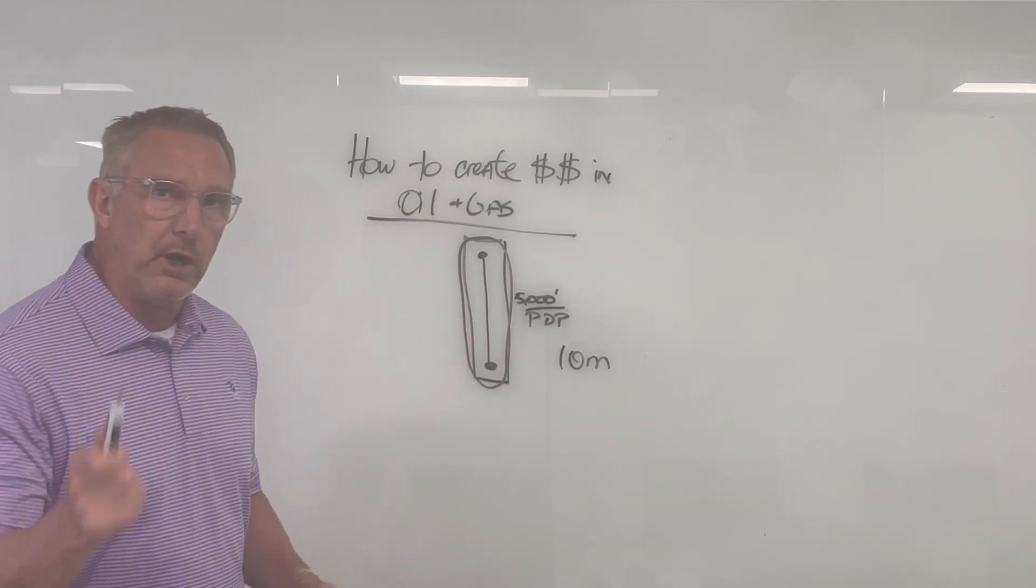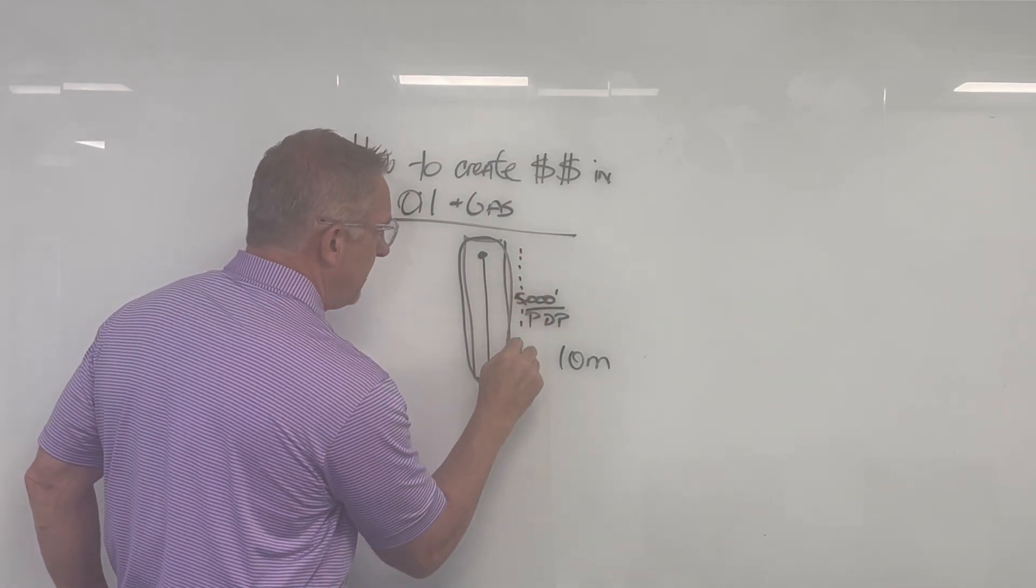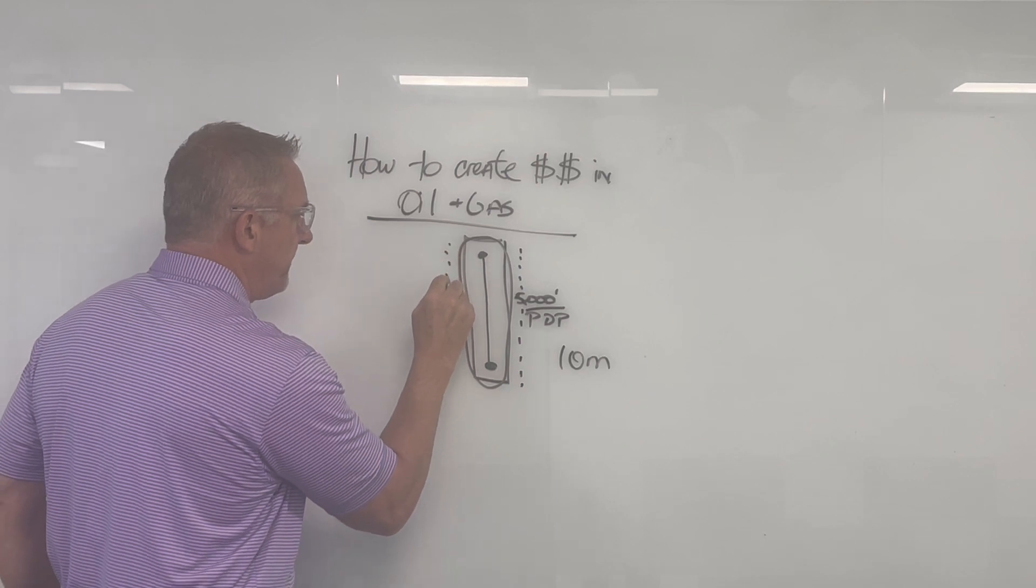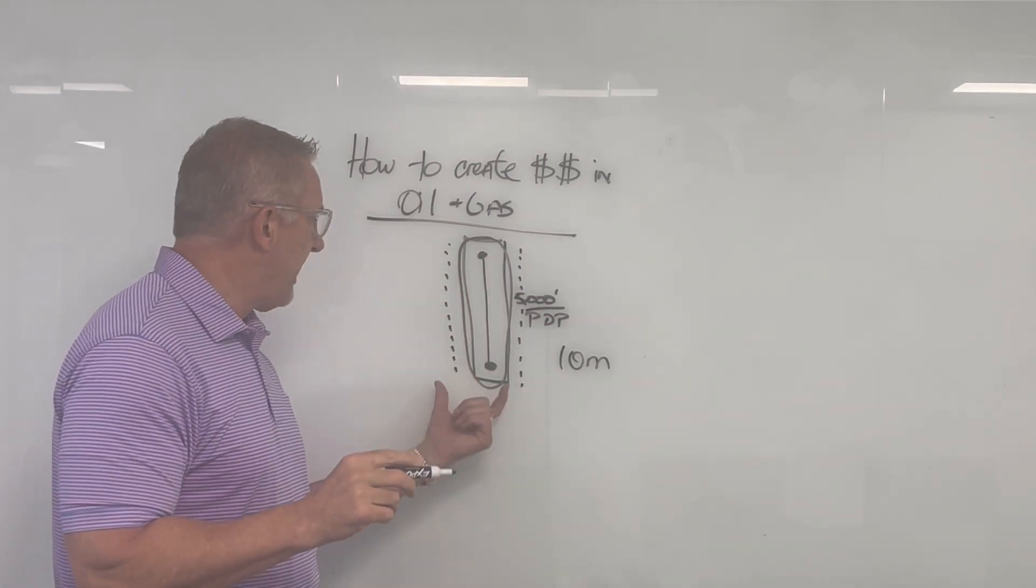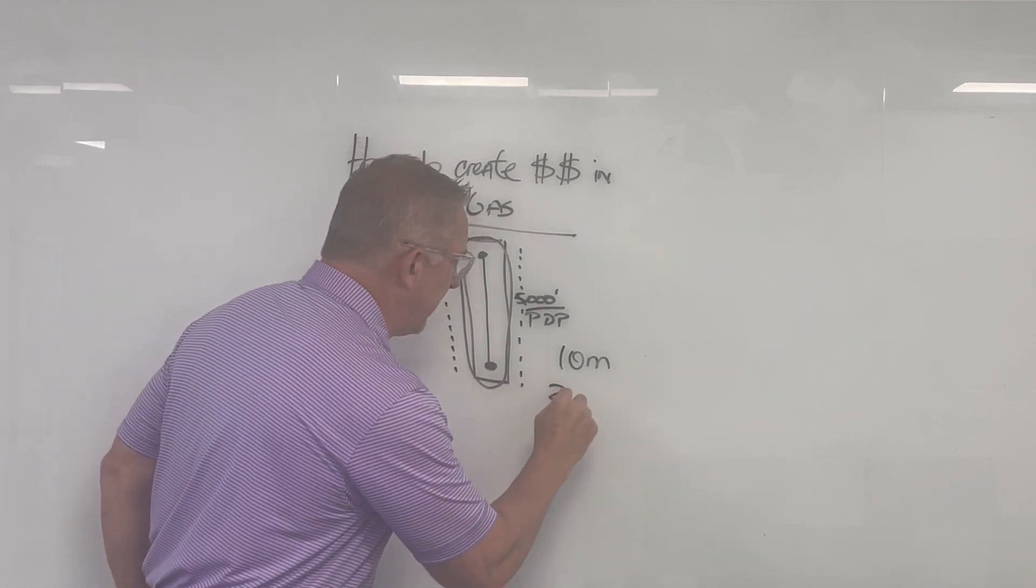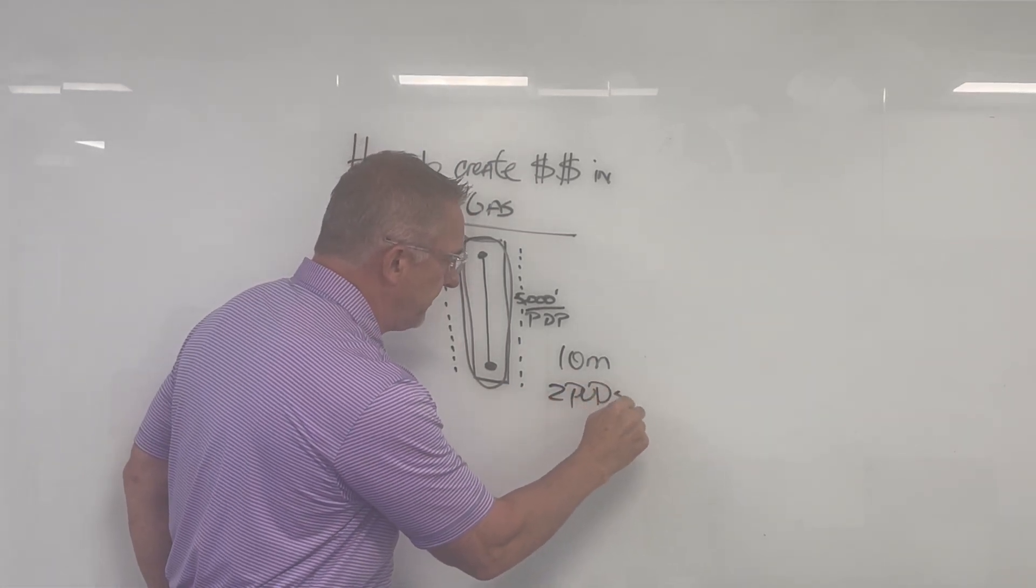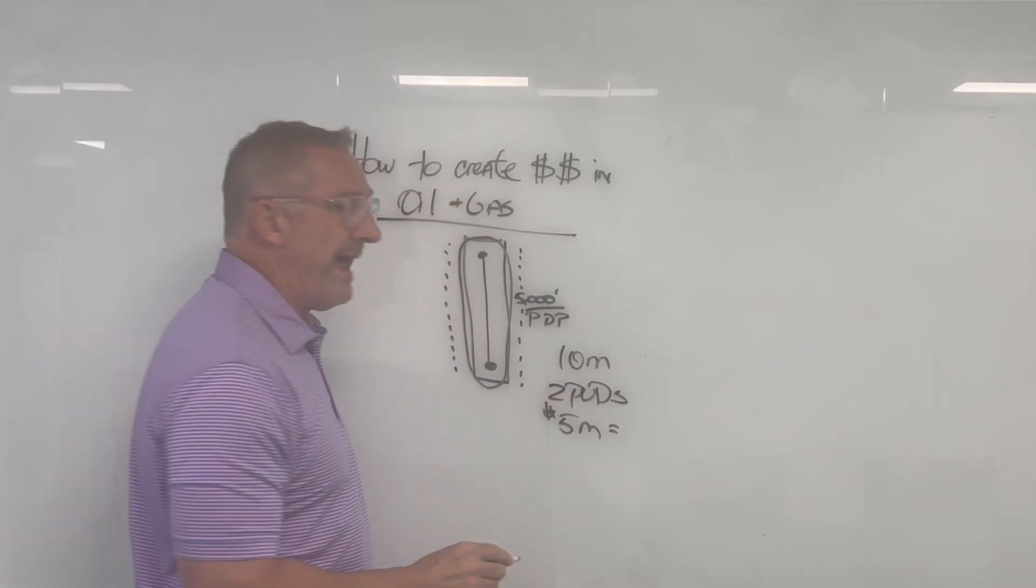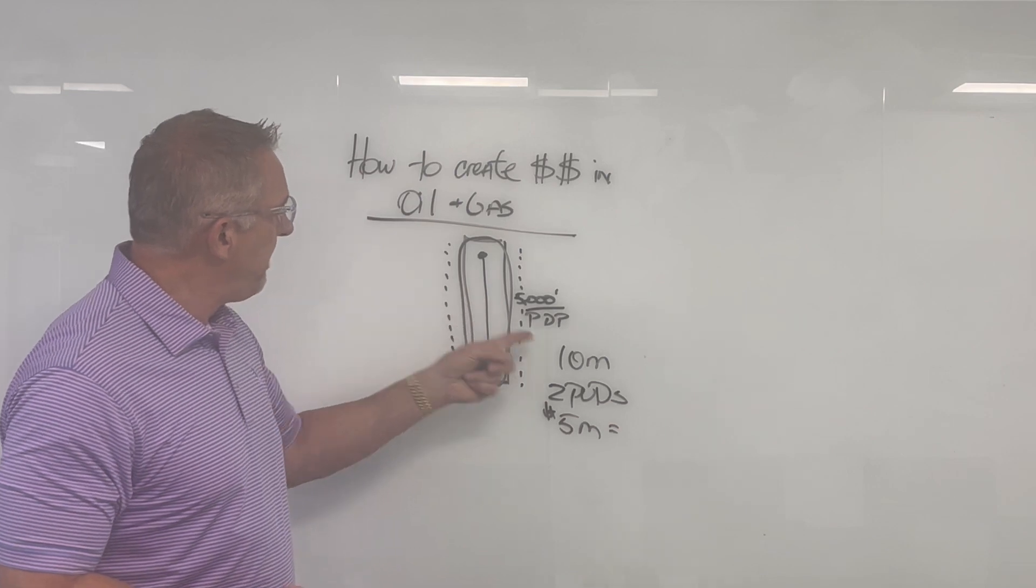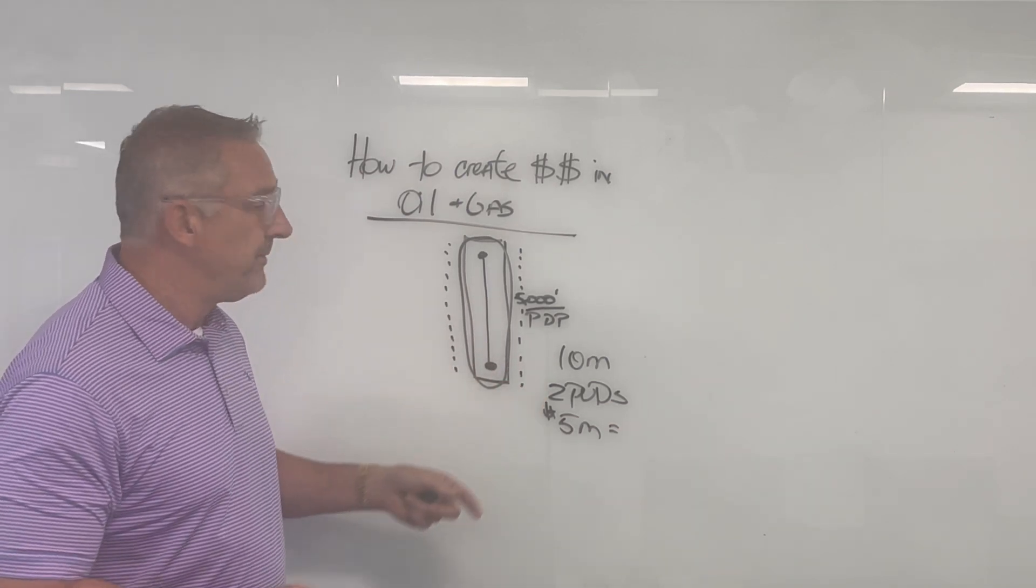But also what they're going to allow you to do is to put in here that you have an offset location. So you have two offset locations, which they call PUDs, two PUDs, at $5 million each. So now we've got one PDP well at $10 million, we have two PUDs at $5 million, that's another $10 million.